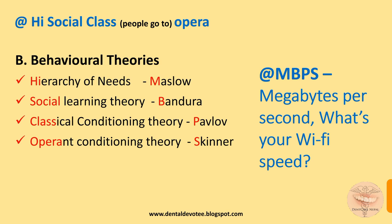The respective propounders of these theories in order can be memorized by 'MBPS' — megabytes per second, a unit of internet speed. M for Maslow (hierarchy of needs), B for Bandura (social learning theory), P for Pavlov (classical conditioning theory), and S for Skinner (operant conditioning theory).